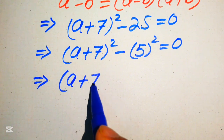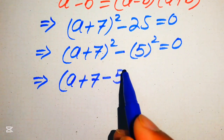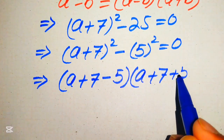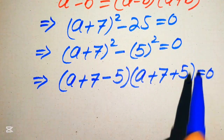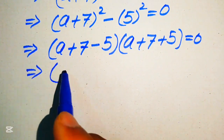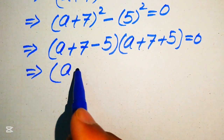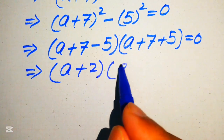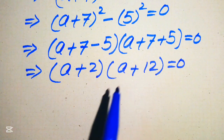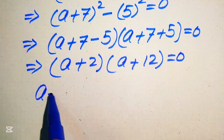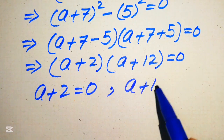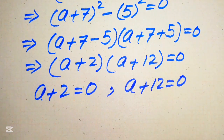Applying the difference of squares formula: (a + 7 − 5)(a + 7 + 5) = 0, which simplifies to (a + 2)(a + 12) = 0. We now split into two cases: a + 2 = 0 and a + 12 = 0.